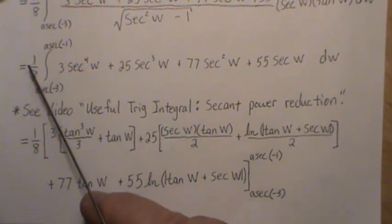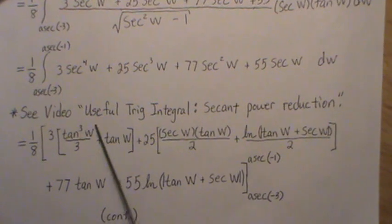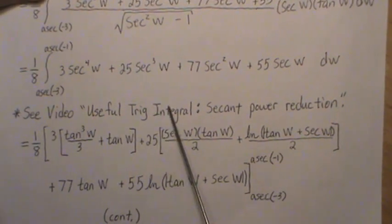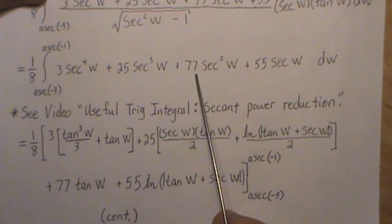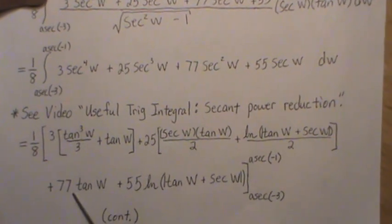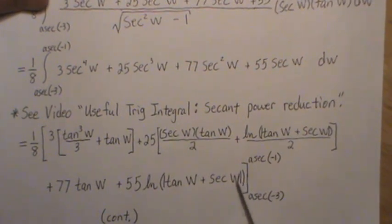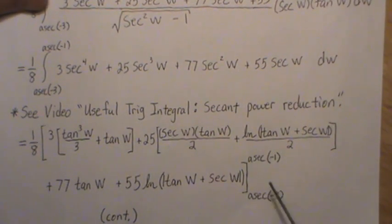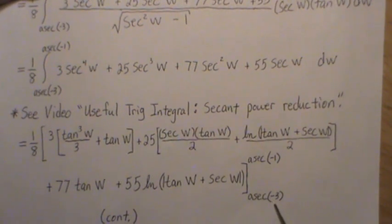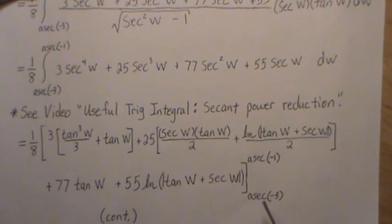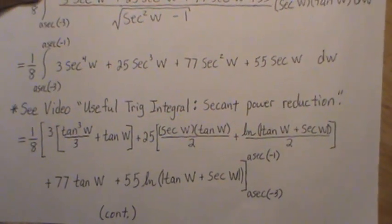So then this term, so we come down. This evaluates to this. The 3 out front and then the secant of the fourth evaluates to this. 25 secant cubed evaluates to this long term. And then secant squared is just actually tangent, 77. And secant w evaluates to this. It's the natural log of this. And there's an absolute value sign in there because it has to be positive. And then we evaluated each of these terms. Arc secant of minus 1 and arc secant of minus 3. And you plug this in for w and then minus and then plug this in. And that's it. That's the answer. But I want to take it a few more steps.